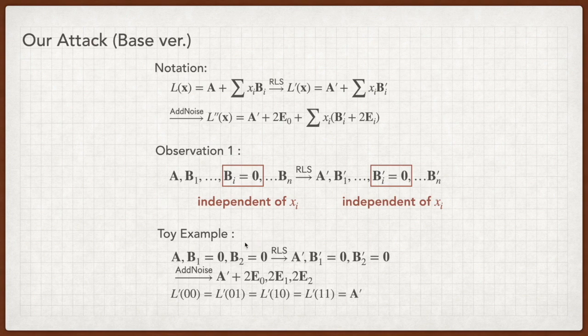I will show our attack by two examples. Assume that we have an ADP whose B1 and B2 matrix are all zero matrices. After RLS, the B1 prime and B2 prime are zero matrices too. Thus, when we compute L prime of X, which equals A prime plus sum of XI BI prime from I equals 1 to N, we have L prime of 0,0 equals L prime of 0,1 equals L prime of 1,0 equals L prime of 1,1.